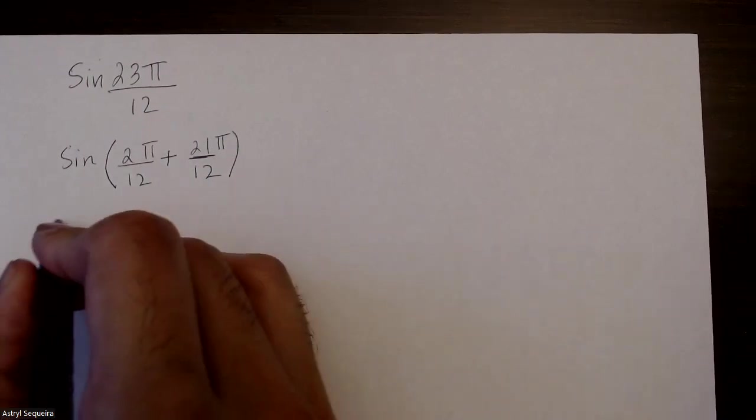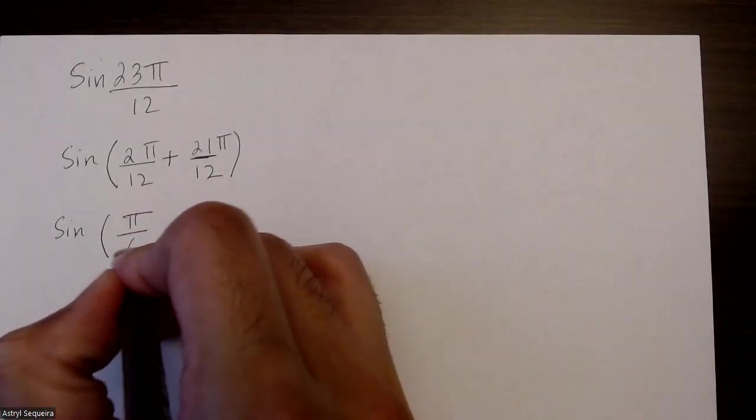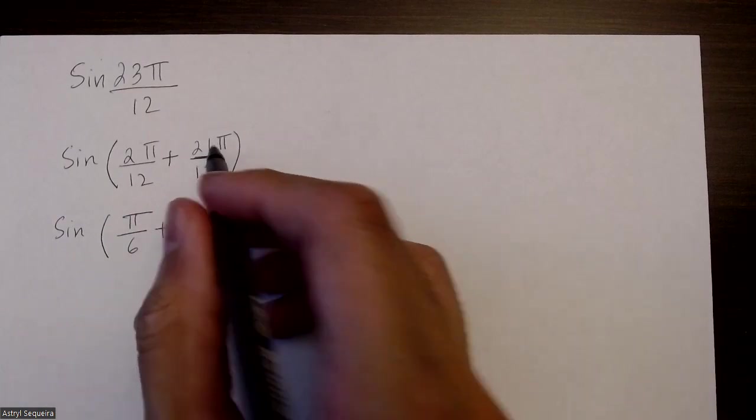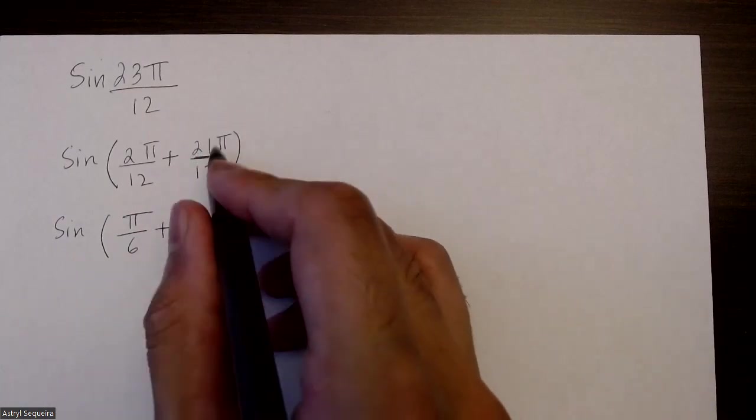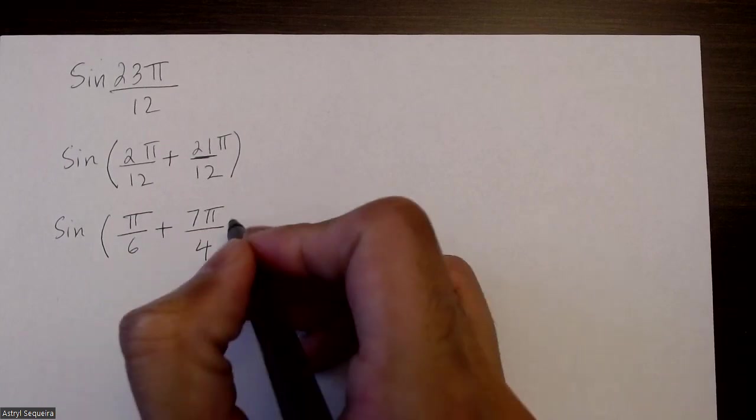The next thing you want to do is simplify the fractions. So this is going to turn into π over 6, and this is going to turn into, I can divide both by 3, so 7π over 4.